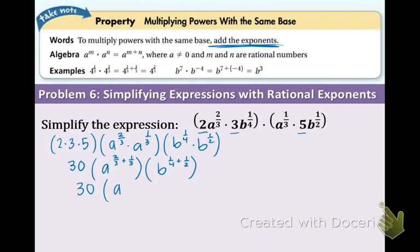30 a 2 thirds plus 1 third, you can go ahead and combine those if you know what to do, and b to the 1 fourth plus 2 fourths. I hope you agree that 2 fourths is equal to 1 half. Now let's keep going. The new exponent is going to be 3 over 3 for the a, and for the b we're going to have 3 fourths we're adding.